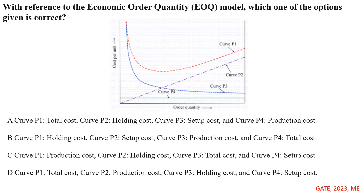In the previous lecture, we already discussed the various inventory costs. We know that purchasing cost or production cost is fixed and constant — it does not depend on the order quantity. So here, curve P4 represents the production or purchasing cost.